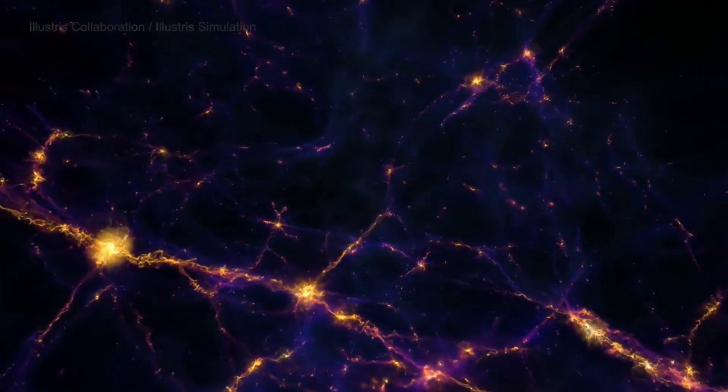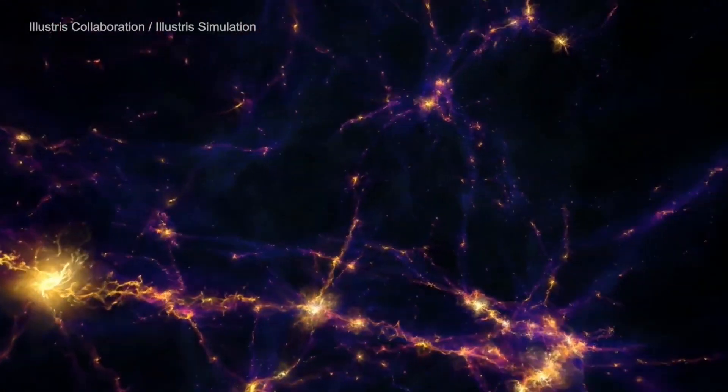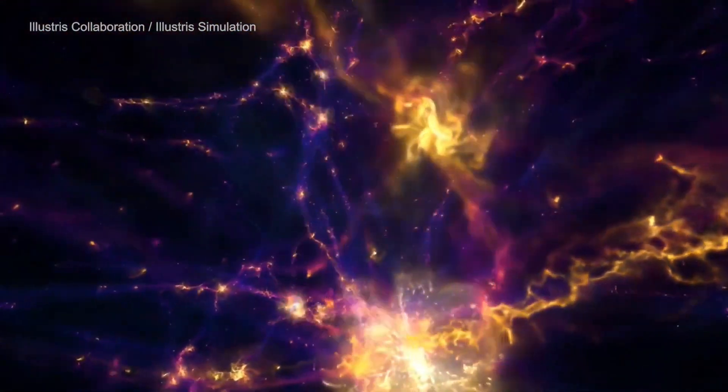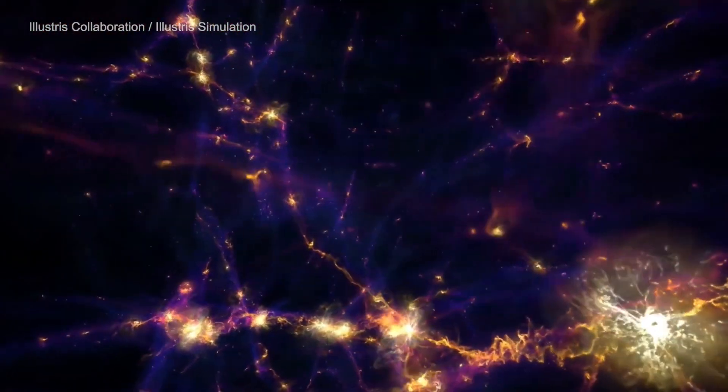We know there are about 100 billion galaxies in the universe, maybe more, but we still don't have a good understanding how these galaxies came to be. Did they all form at the same time? Did they change in size and luminosity or brightness over time?